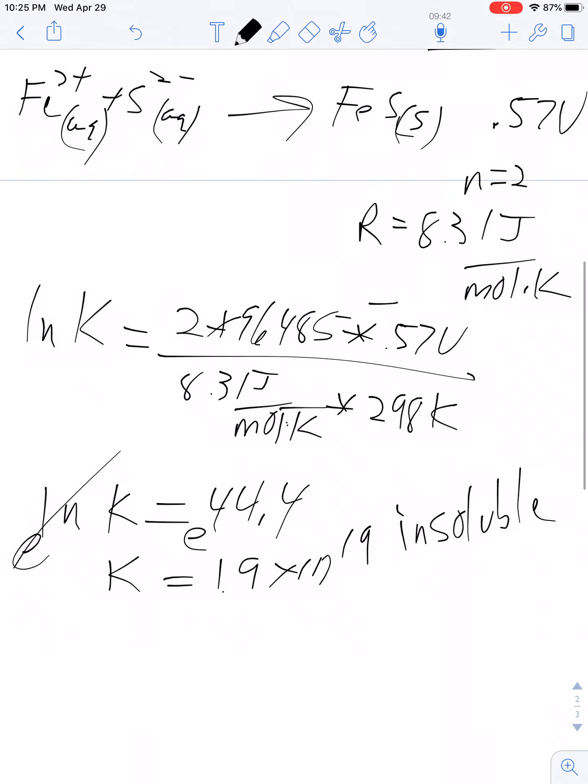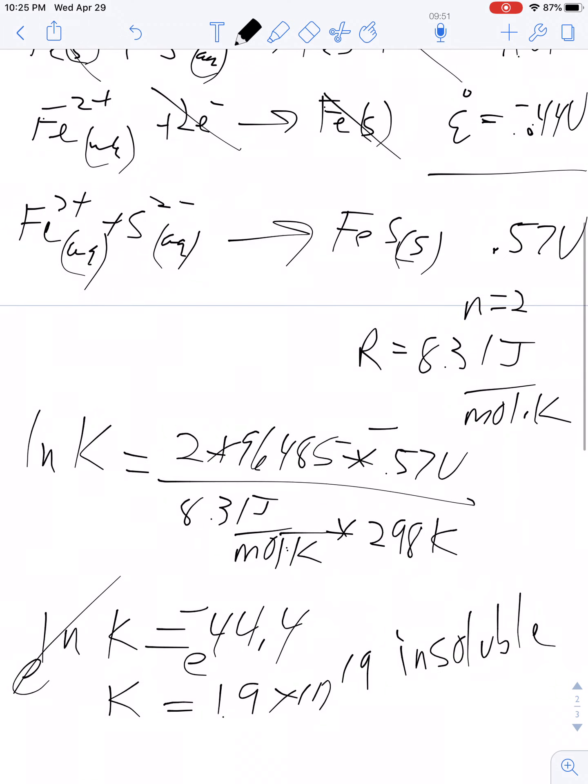So in other words, we're going to get a super small number because we're taking the ln of a very small number. So I got this reaction wrong here. It should be written the other way. That should be when the solid, the Ksp is how much will dissolve. So let's just recalculate that.